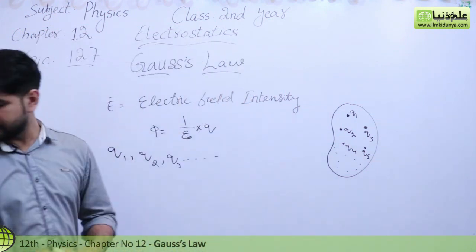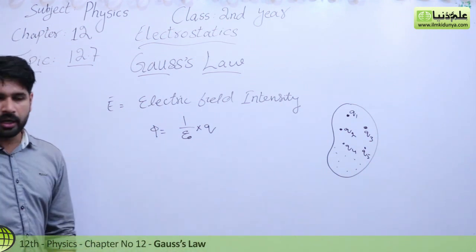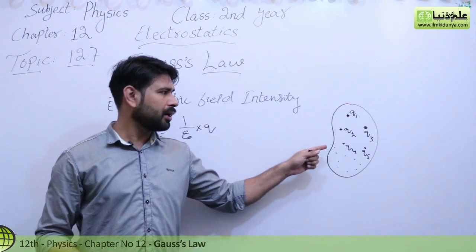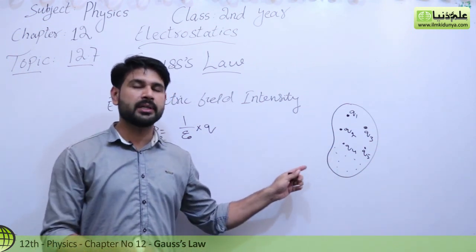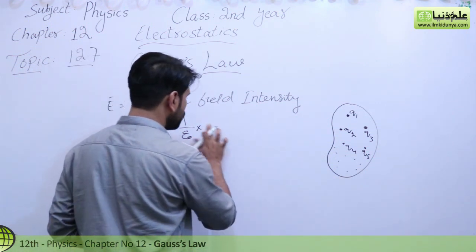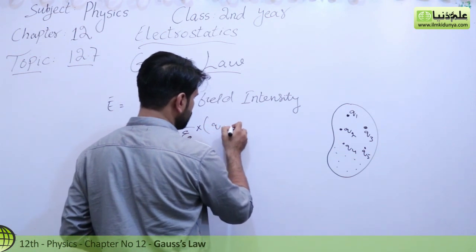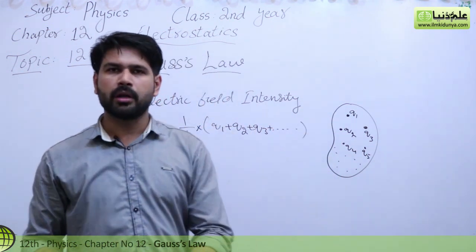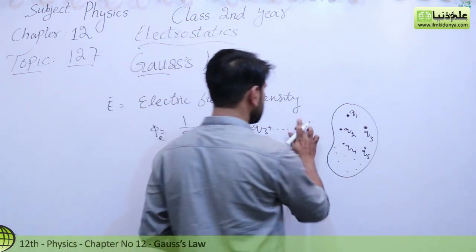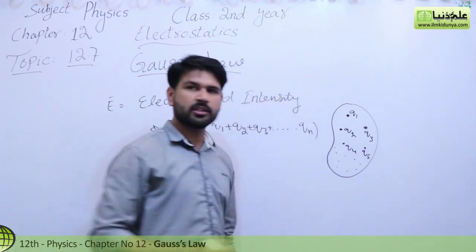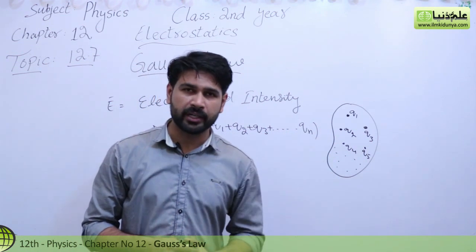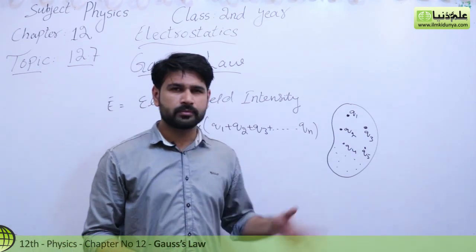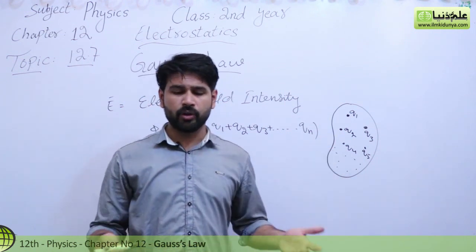According to this formula, the electric flux of that body — because there are a number of charges, not only a single charge — we can write q as q1 + q2 + q3 + and so on. If we have an infinite number of charges, we represent the general term as qn, though we don't know what n is or exactly how many charges there are.